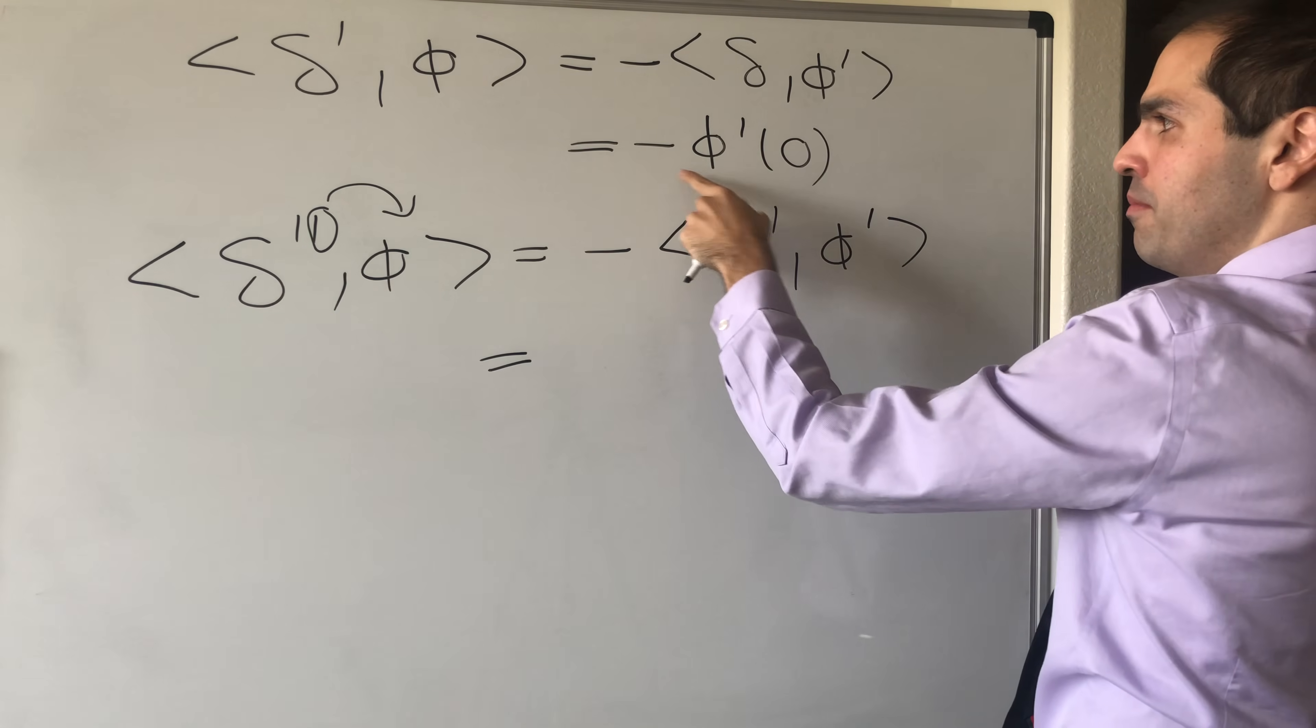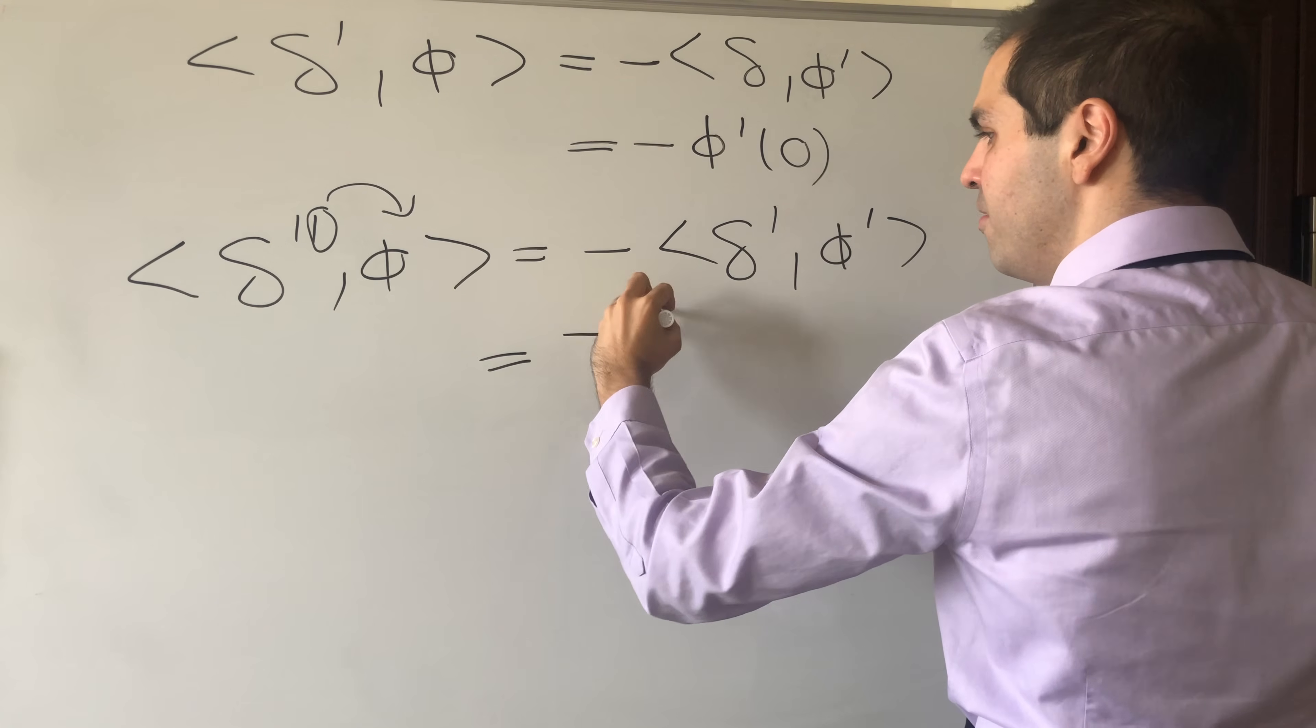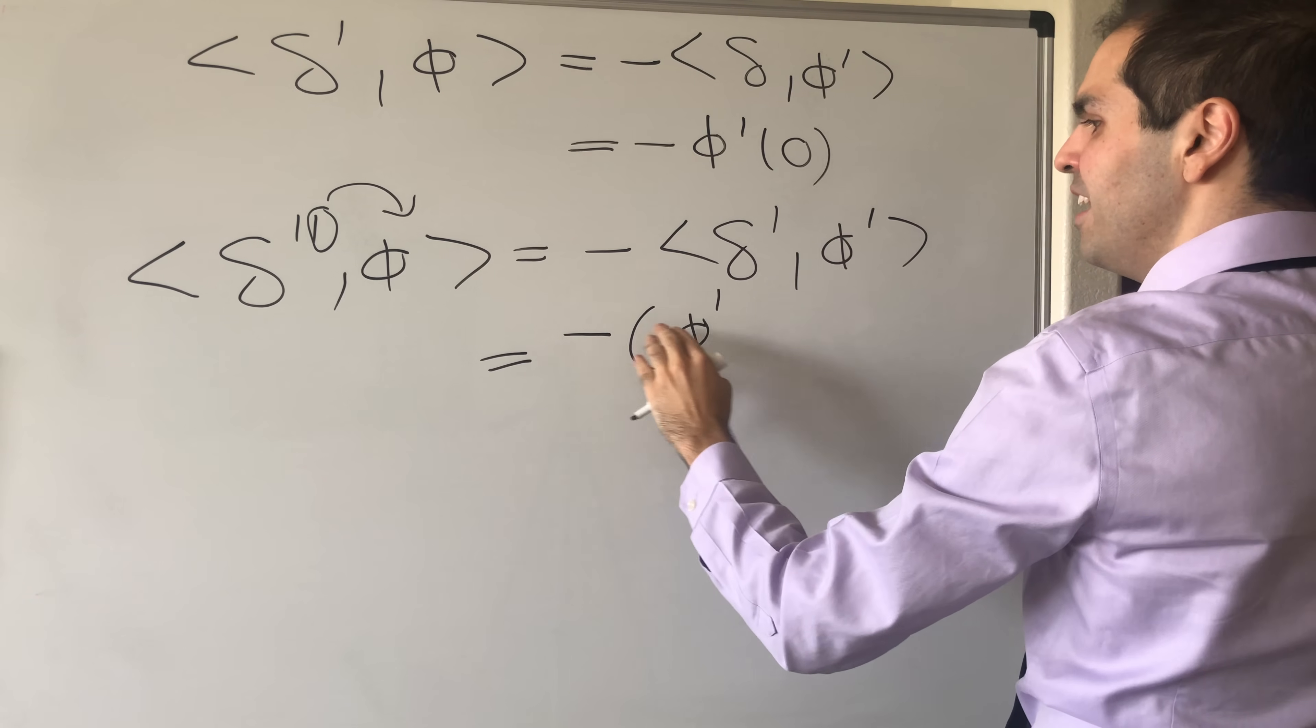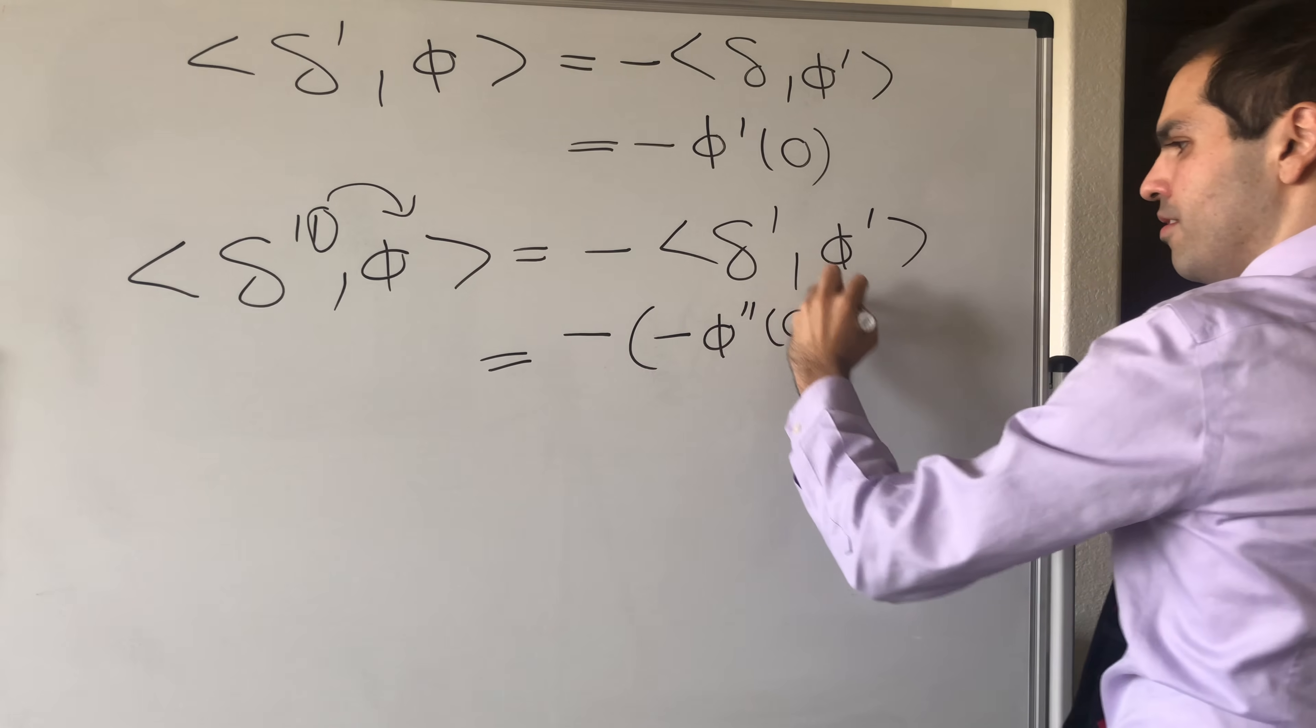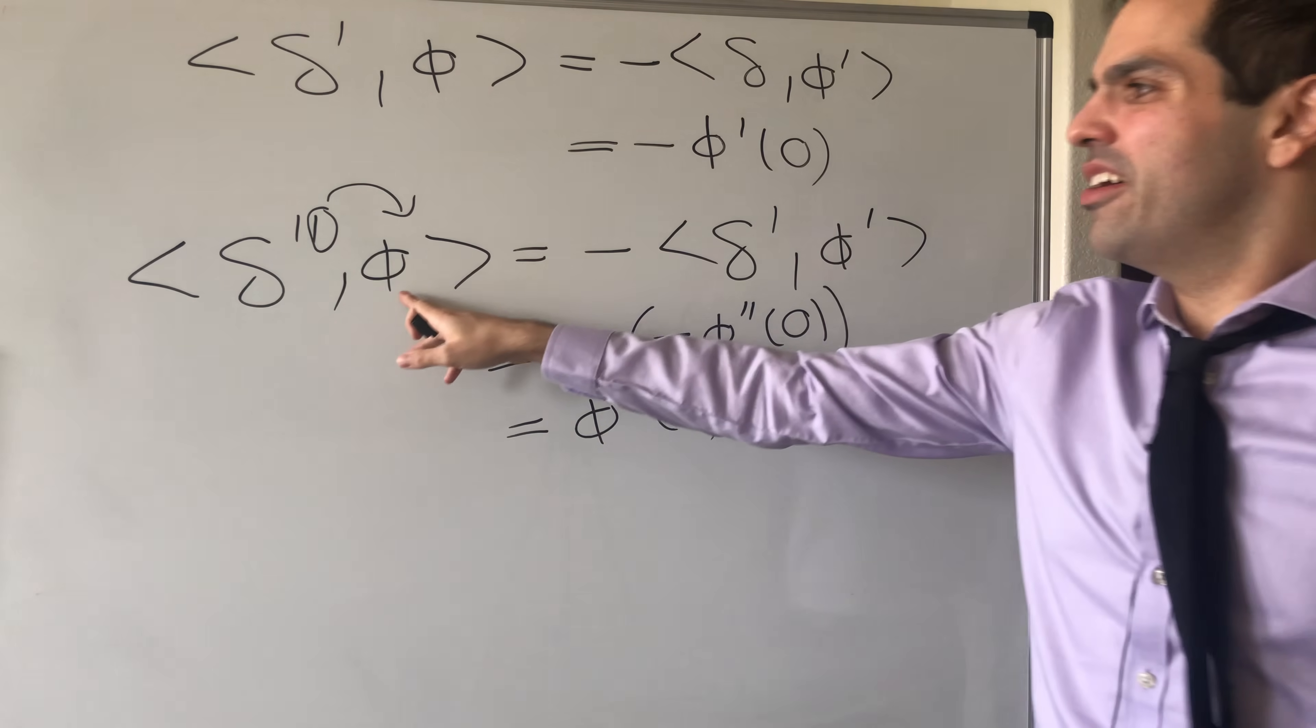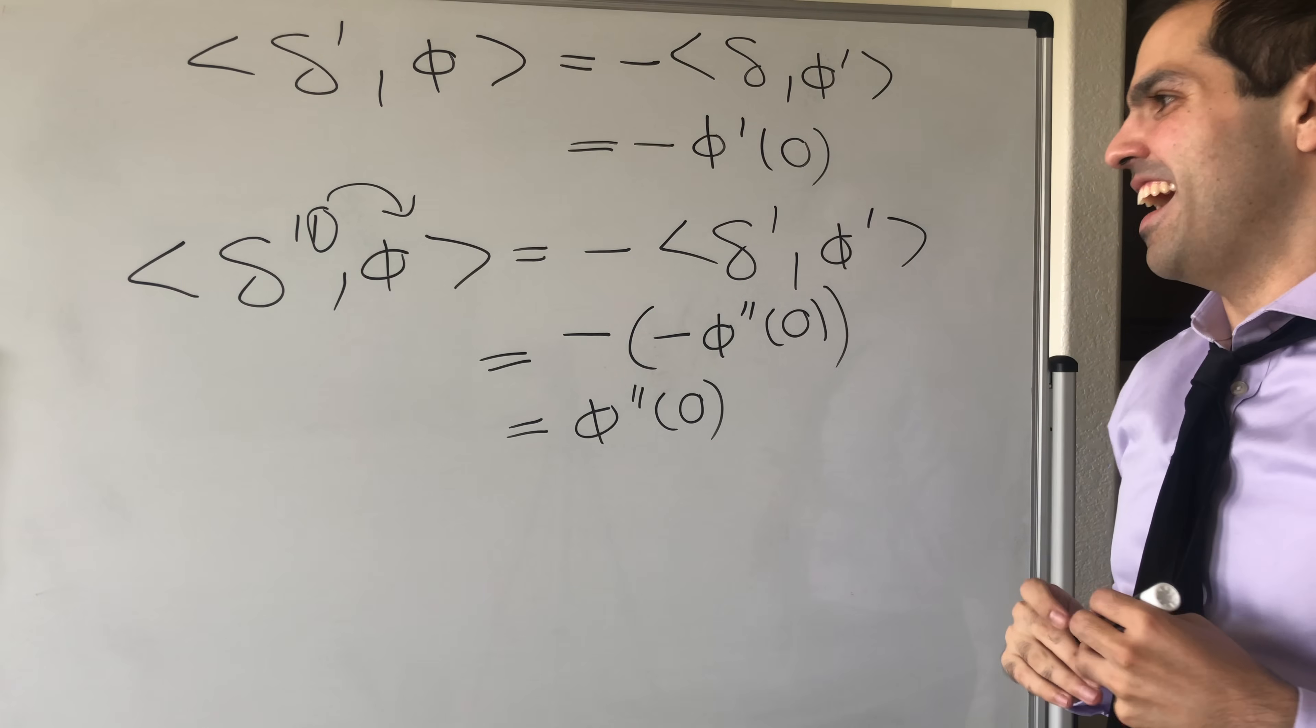And well, what did we find? Delta prime just evaluates minus the derivative at zero, so it's minus minus phi prime prime at zero, and that becomes phi double prime at zero. So it takes a function as an input and spits out the acceleration at zero.